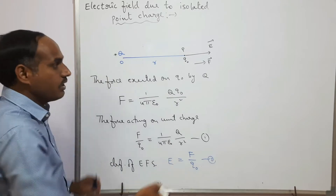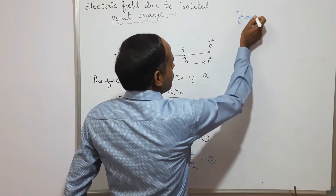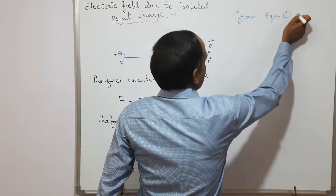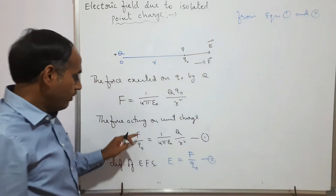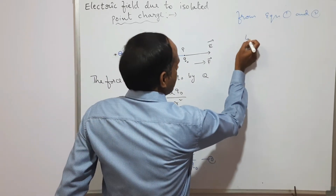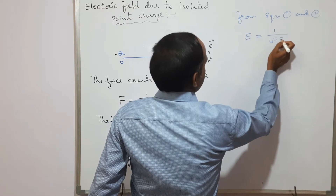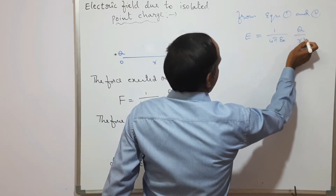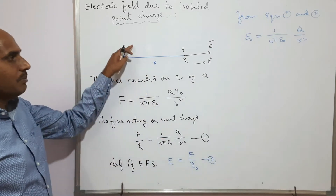From equation 1 and equation 2, we can write the electric field strength at this point as: E = (1/4πε) × q / r².